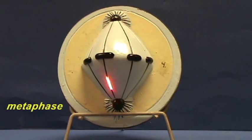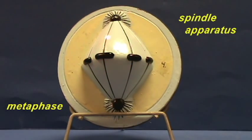This is metaphase. These centrioles have moved to opposite poles in the cell. The microtubules are radiating from one to the other and form this spindle apparatus.